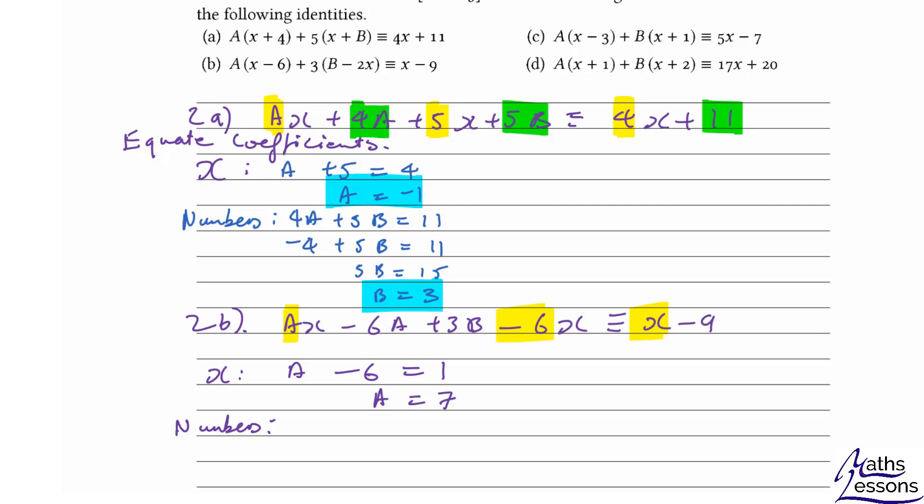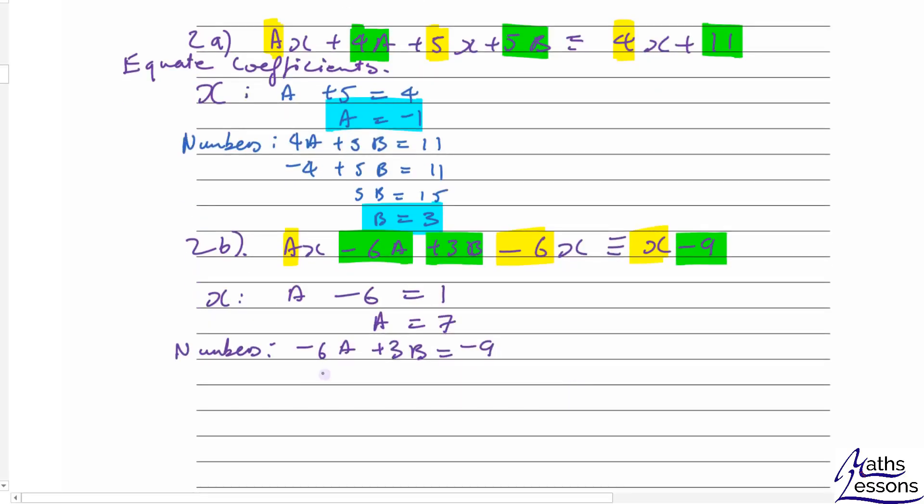Now we do the numbers. We highlight those - we did it green last time - we got minus 6a plus 3b and minus 9 for our numbers. So minus 6a plus 3b equals minus 9. We know a is 7, 6 times 7 is 42, so minus 42 plus 3b equals minus 9. Add 42 to that side, we get 3b equals 33, so b equals 11. Our final answers are a equals 7 and b equals 11.